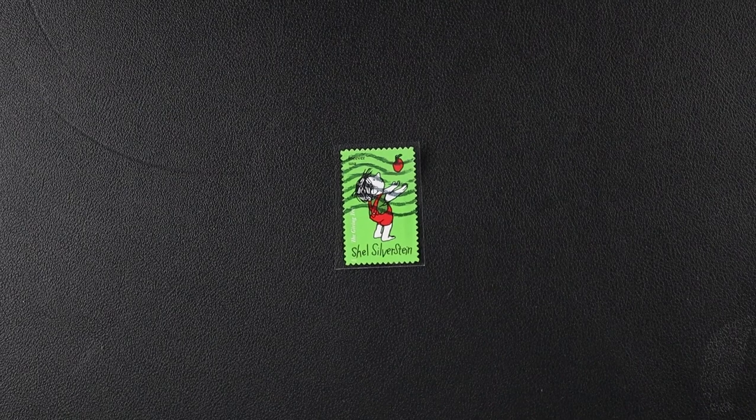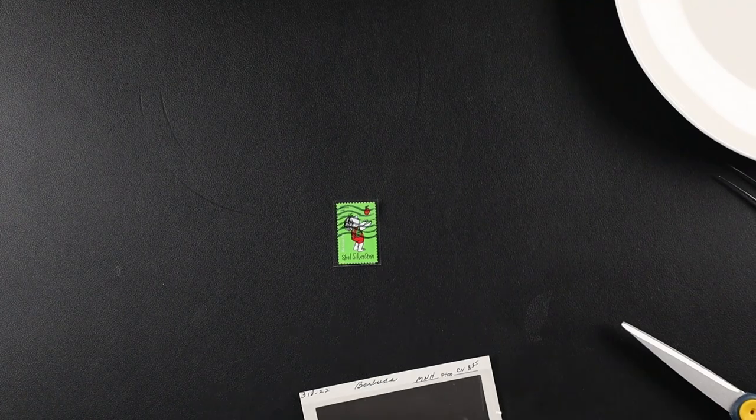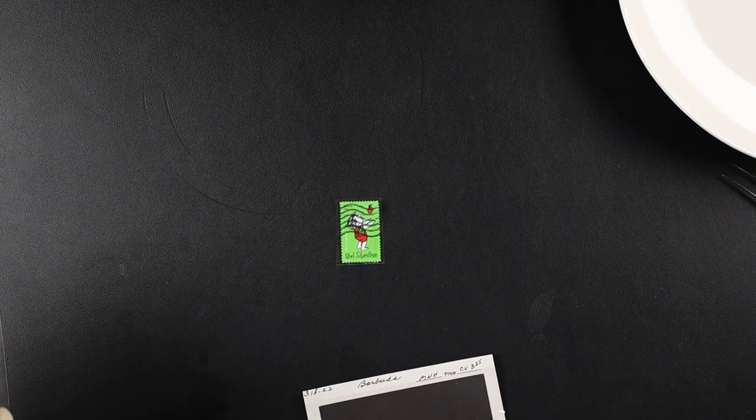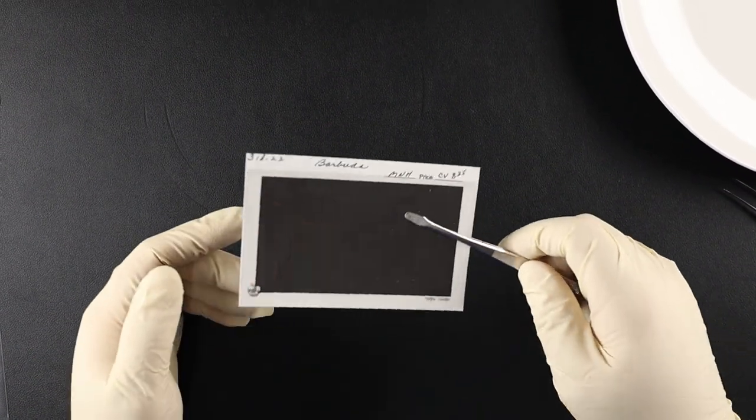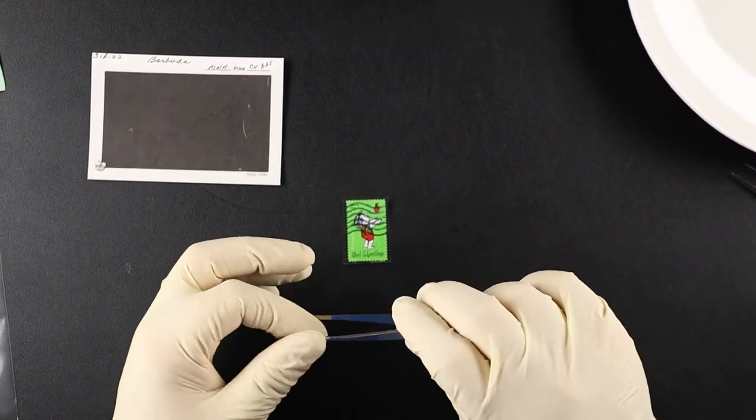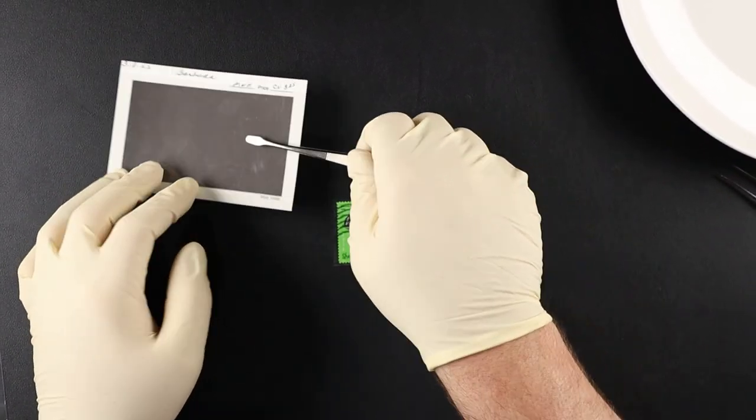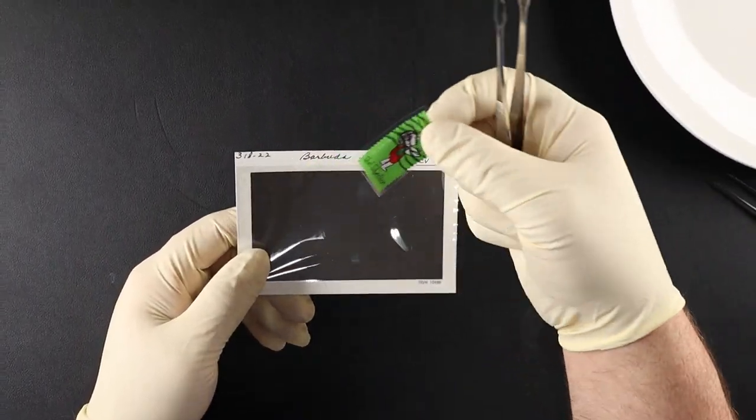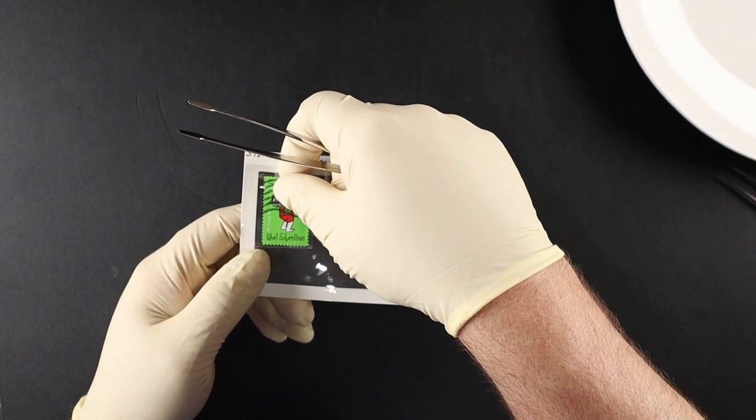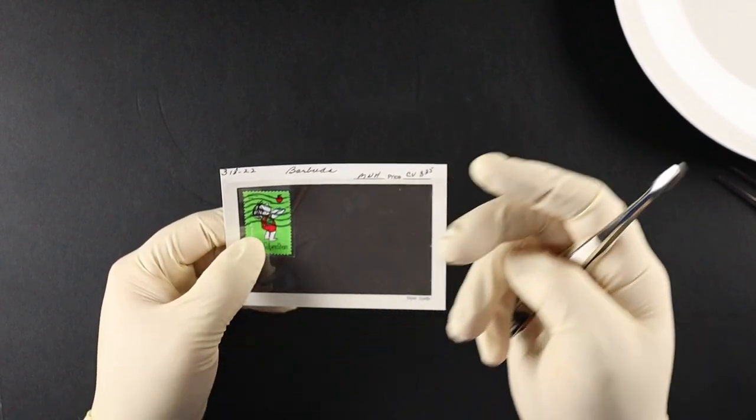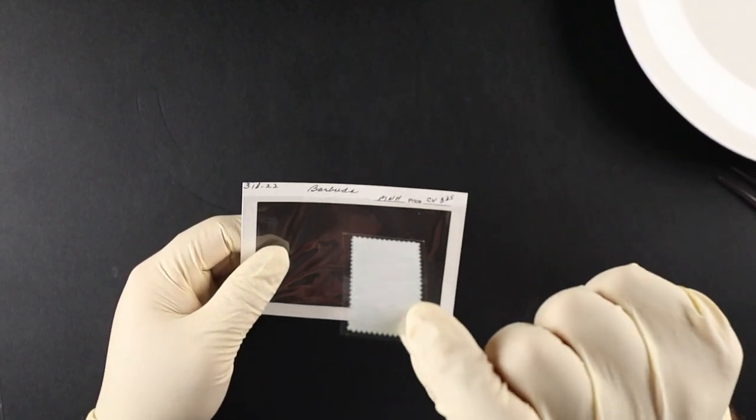Now I do also want to mention, if you don't have these big polypropylene bags, which I do recommend getting them - they're dirt cheap to get a whole bunch of them for cheap - the guy that I learned this method from on his video, he actually was sticking them to used stock cards instead of these bags. He removed the stamp, stick it right on top of a stock card, and then he would just cut it out of the stock card and end up with the same exact result.